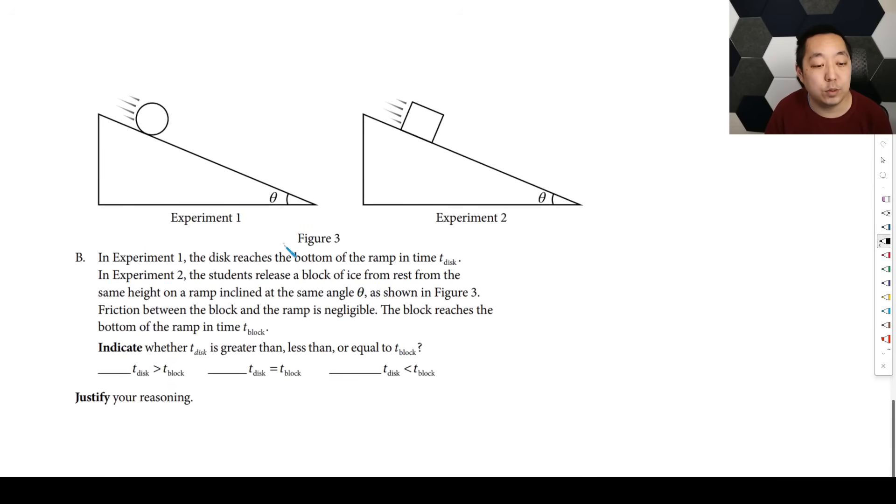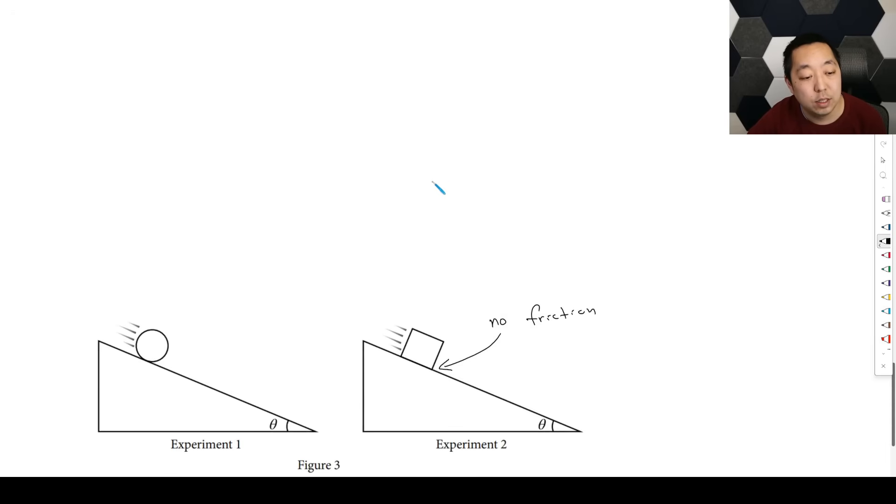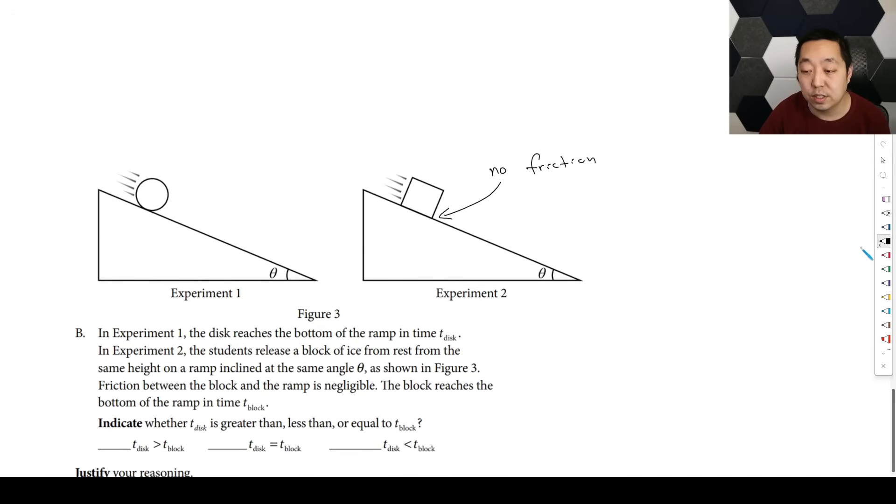In experiment one, the disk reaches the bottom of the ramp at time t disk. In experiment two, the students release a block of ice from rest, same height, the friction between the block and the ramp. So there's no friction here, but there is friction here. The block reaches the bottom in t block. Is t disk greater than, less than, or equal to t block? Well, if we think about it from our, you know, you could either do the analysis again, but you think about just from our forces, right? This thing had a frictional force up the ramp.